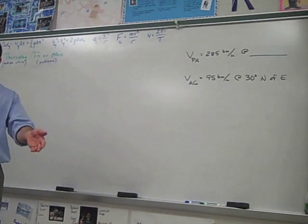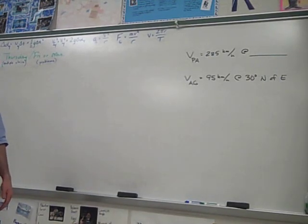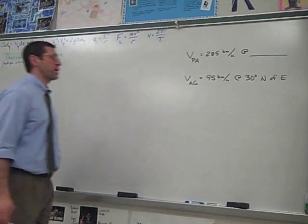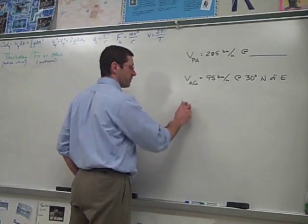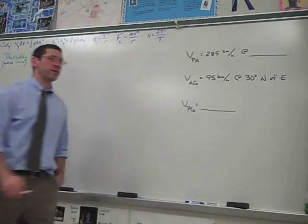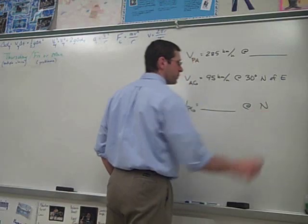And then we want to know, relative to somebody on the ground, what is the airplane's velocity. So the person on the ground has to account for the air moving and for the plane propelling itself through the air. So that's going to be the velocity of the plane relative to the ground. We don't know how fast it would be going relative to the ground, but we do know that we want it to be going due north, exactly north.